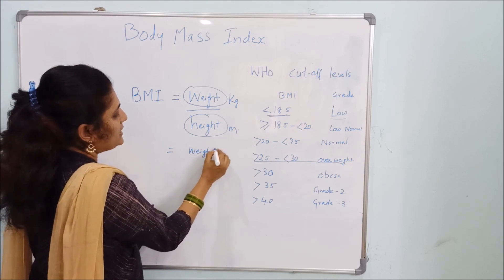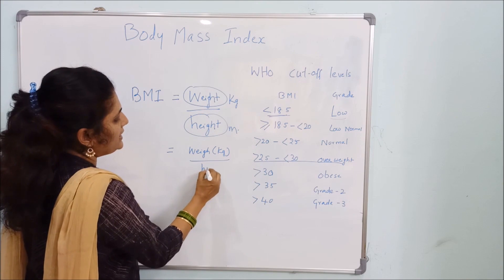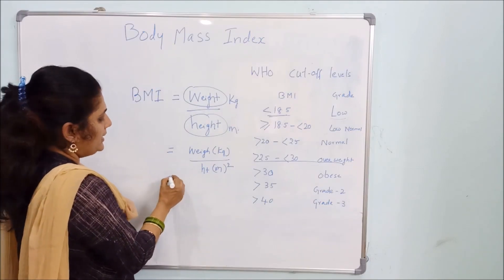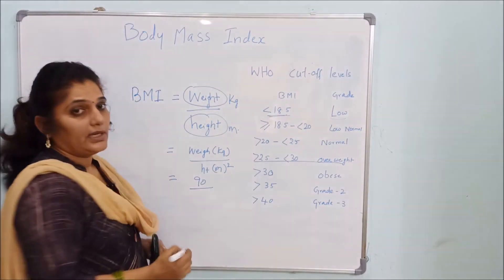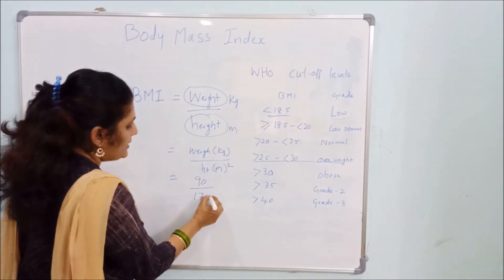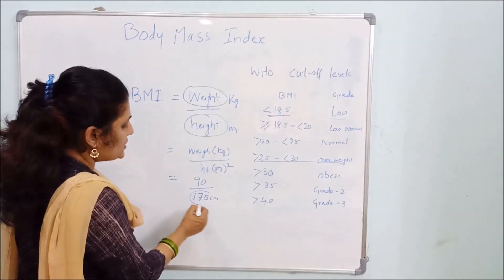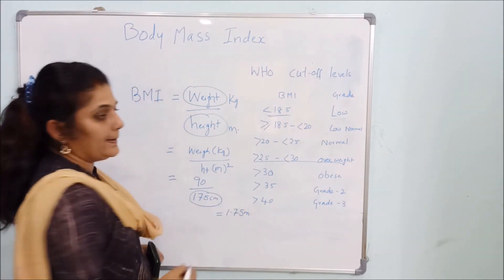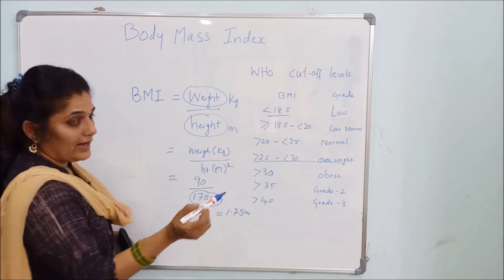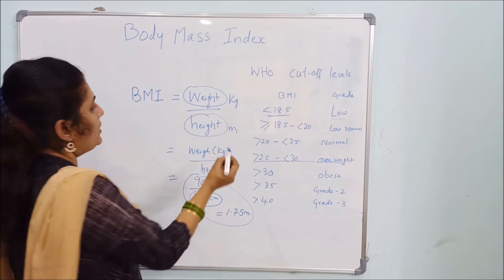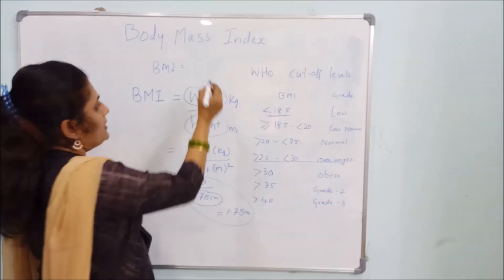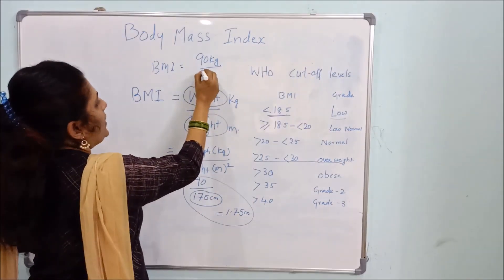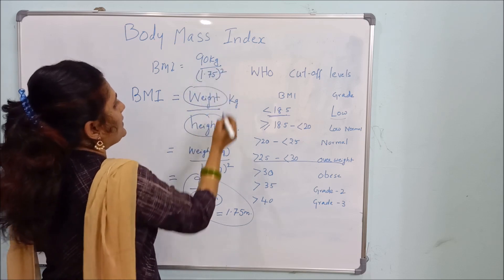The formula is: BMI = weight in kilograms divided by height in meters squared. For example, suppose you are 90 kg and your height is 175 centimeters. We need to convert 175 centimeters into meters, which gives us 1.75 meters. Now we calculate BMI as 90 kg divided by 1.75 meters squared.